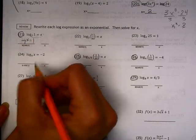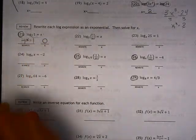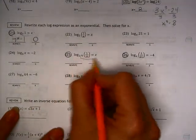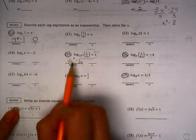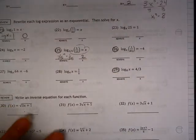7 to the what equals 1. Anything to the 0 is equal to 1, so that is the answer for that. Here, rewrite, 1 fifth to the x is equal to 1 over 25. I just need the 5 to turn into a 25, so a 2 will do that.